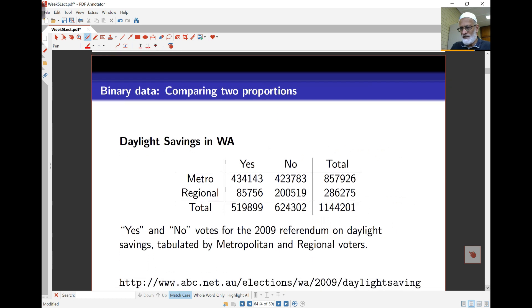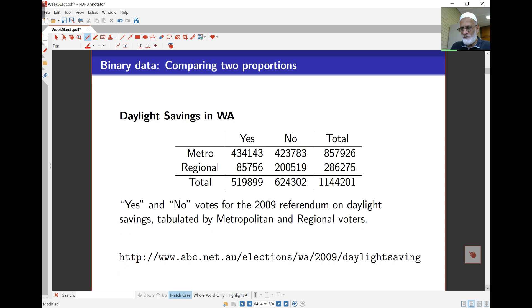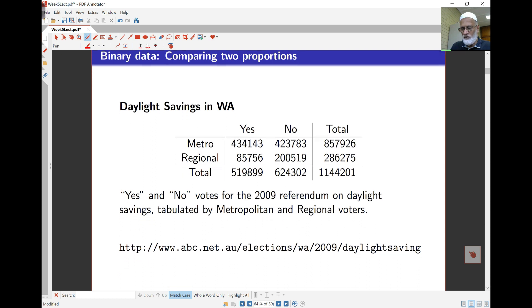Here is this same data presented as a two-way table. We've got here on the top the yes or no vote and along this side we've got the metro and regional areas. So we've got a total of 1,144,000 voters. Out of those in the metro there were 858,000 and in the country 286,000. You'll find this later online.